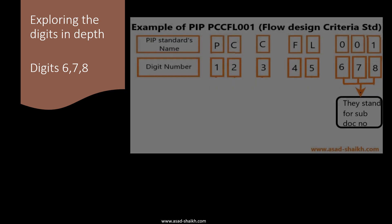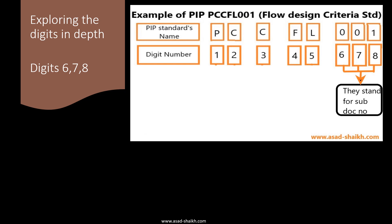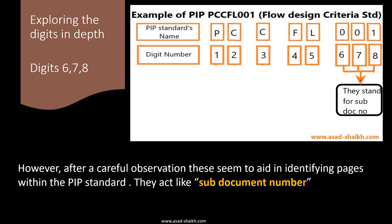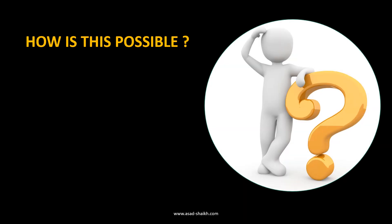Now we come to the end of the coding system: digits six, seven, and eight. These can seem confusing at first because no very specific reason is mentioned on the website. However, what can be observed is that these act as sub-document numbers for the main standard. People sometimes ask what a sub-document number means when a standard has many pages — the following example clarifies this.